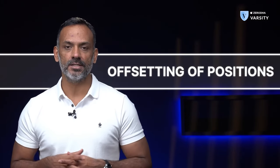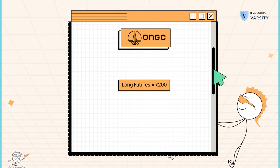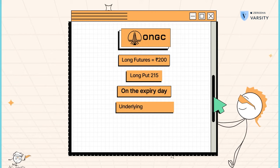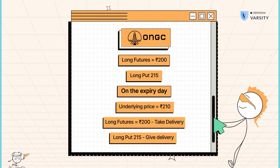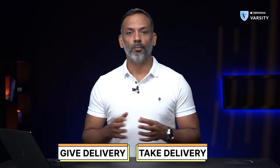Finally, there is a concept of offsetting of positions. Let me explain that with an example. Assume that I have a long futures position on ONGC at 200, and I also have a long put position at 215. On the expiry day, ONGC expires at 210. On one hand, I have a long futures position which entitles me to take delivery of ONGC. On the other hand, I have a long put position which is in the money, which entitles me to give delivery of ONGC. Therefore, on one hand I have the obligation to take delivery, and on the other hand I have the obligation to give delivery. If both are put together, my net obligation is zero. This is a situation where there is an offsetting of positions. So whenever your positions can offset one another, there is no physical settlement — whatever is the difference will be cash settled to you.